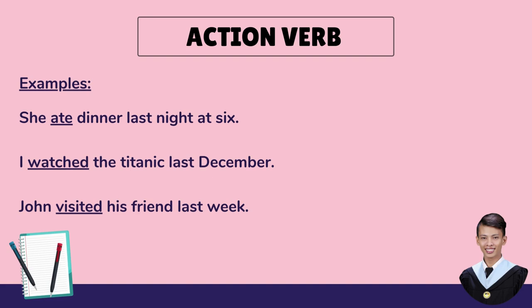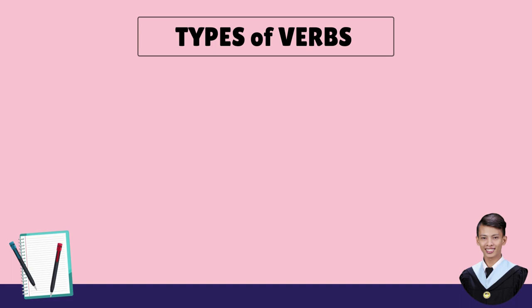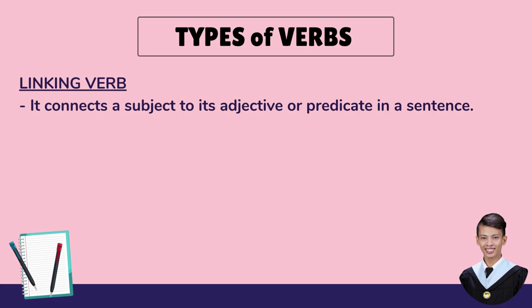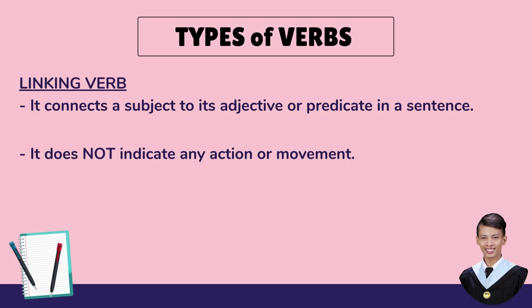The second type of verb is the linking verb. It connects a subject to an adjective or predicate in a sentence. It does not indicate any action or movement — this type of verb only connects. No action nor movement is happening.